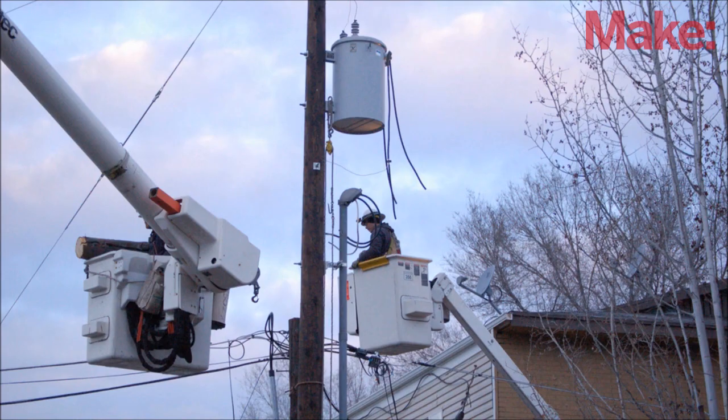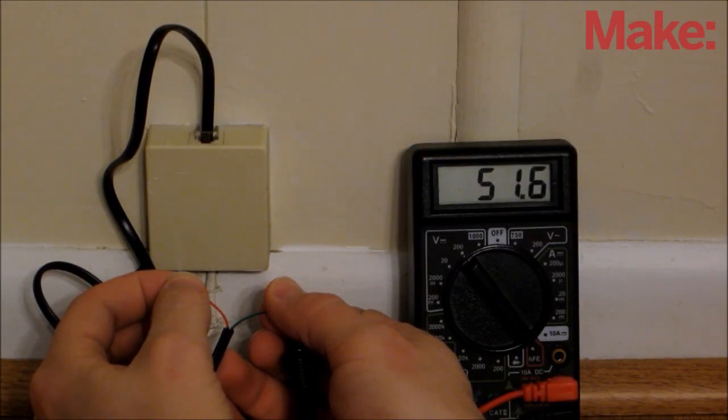Before you try and tap into the electricity in the phone line, you should check it with a multimeter to see what you're working with. At my house, I measured an open circuit voltage of about 52 volts DC.